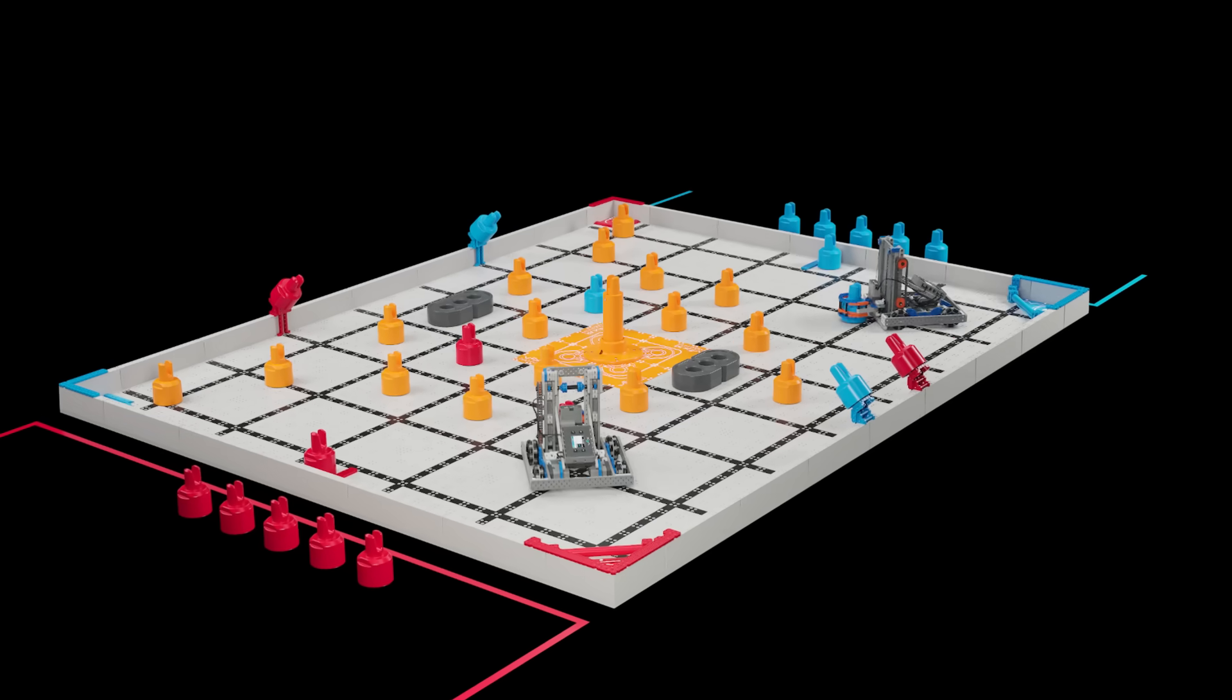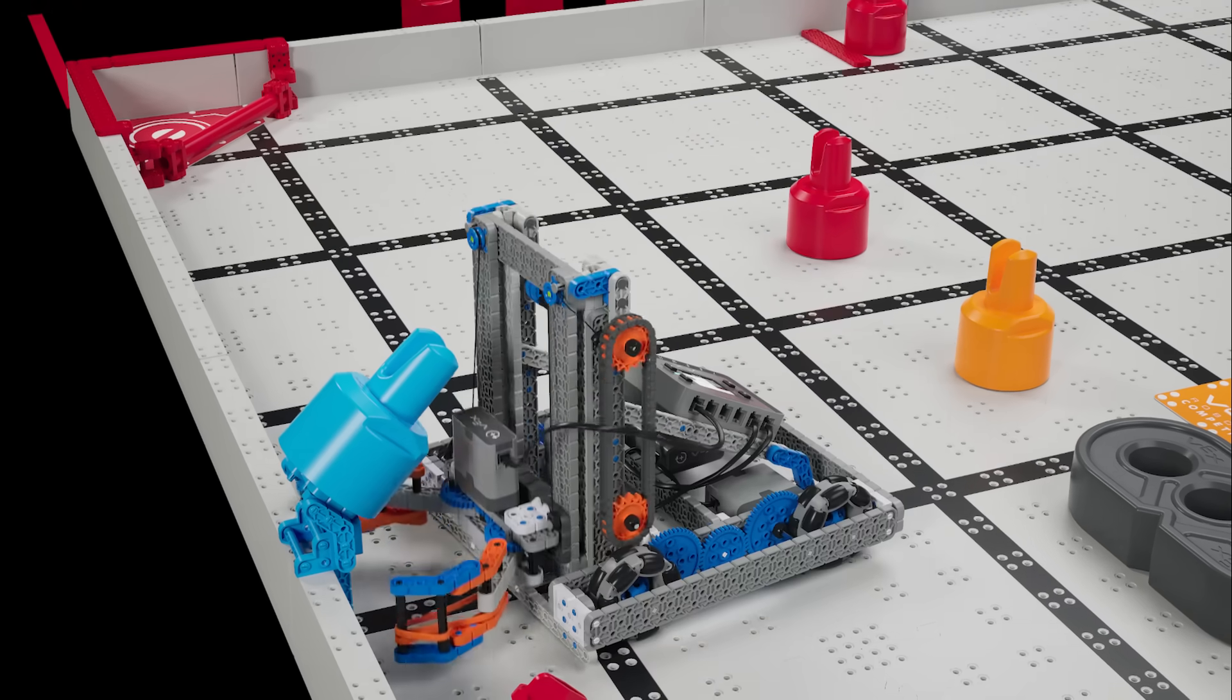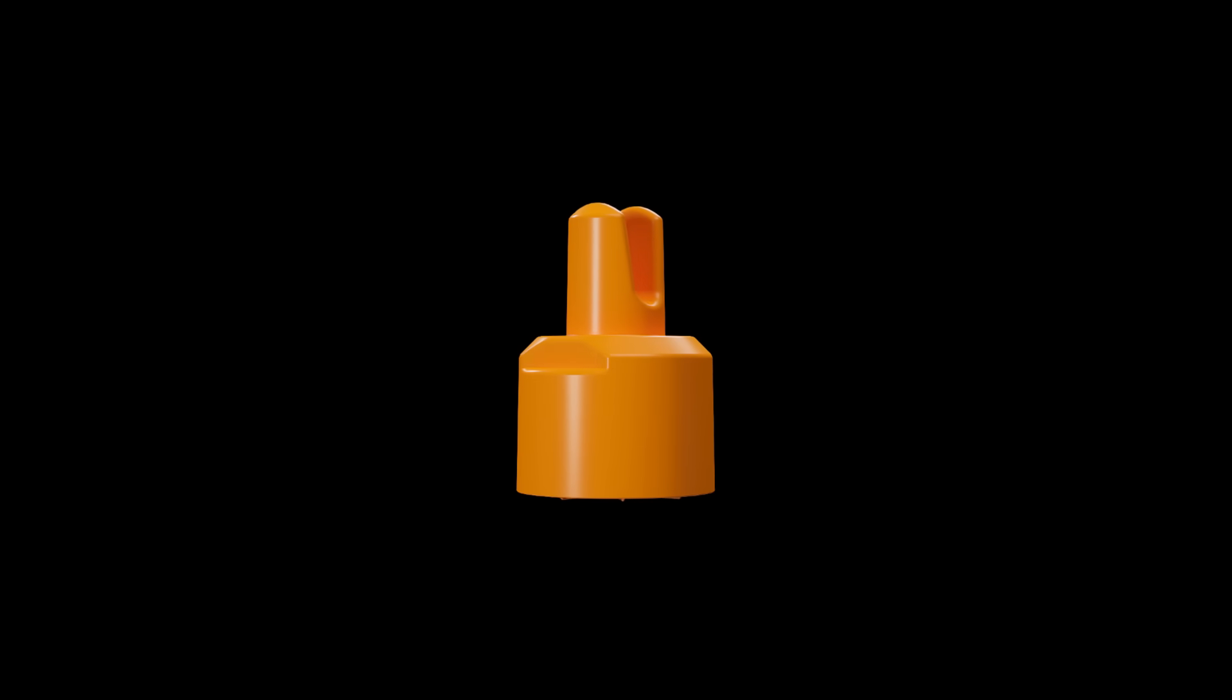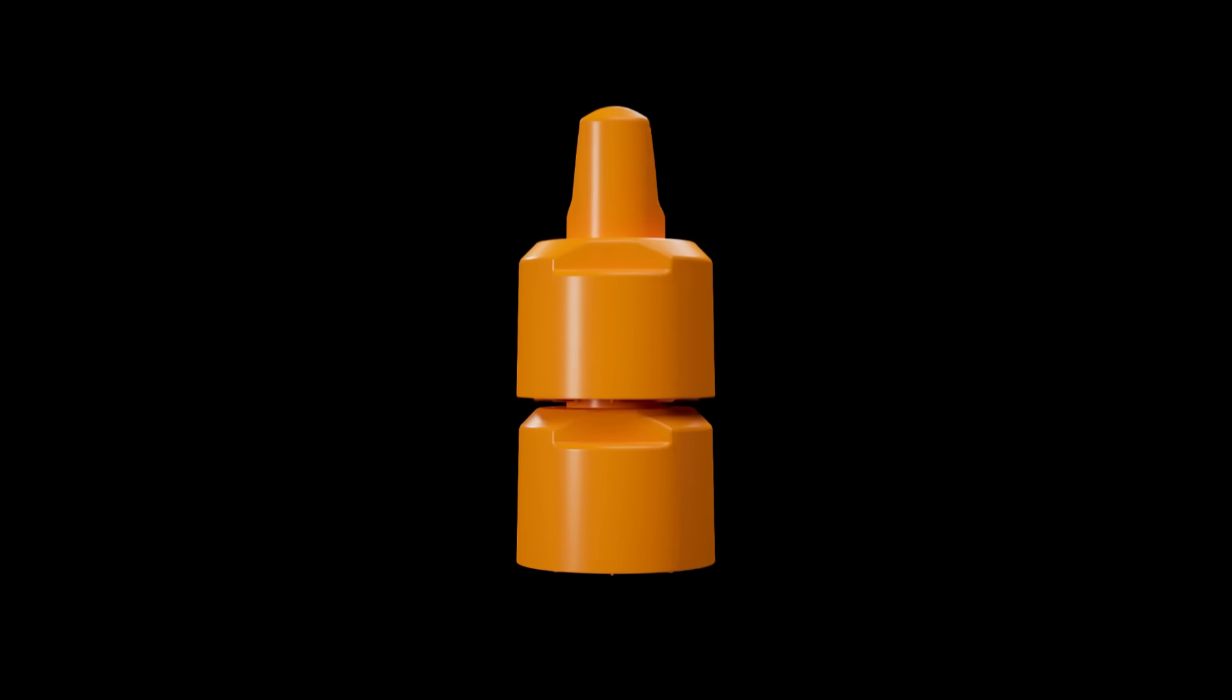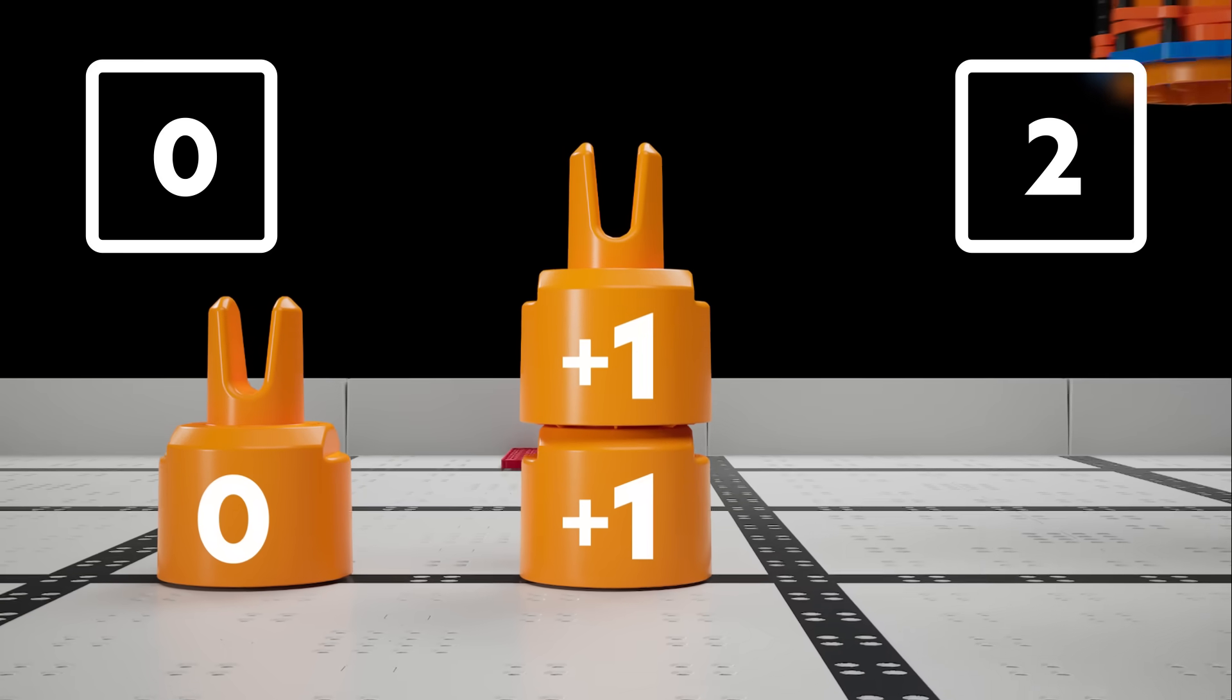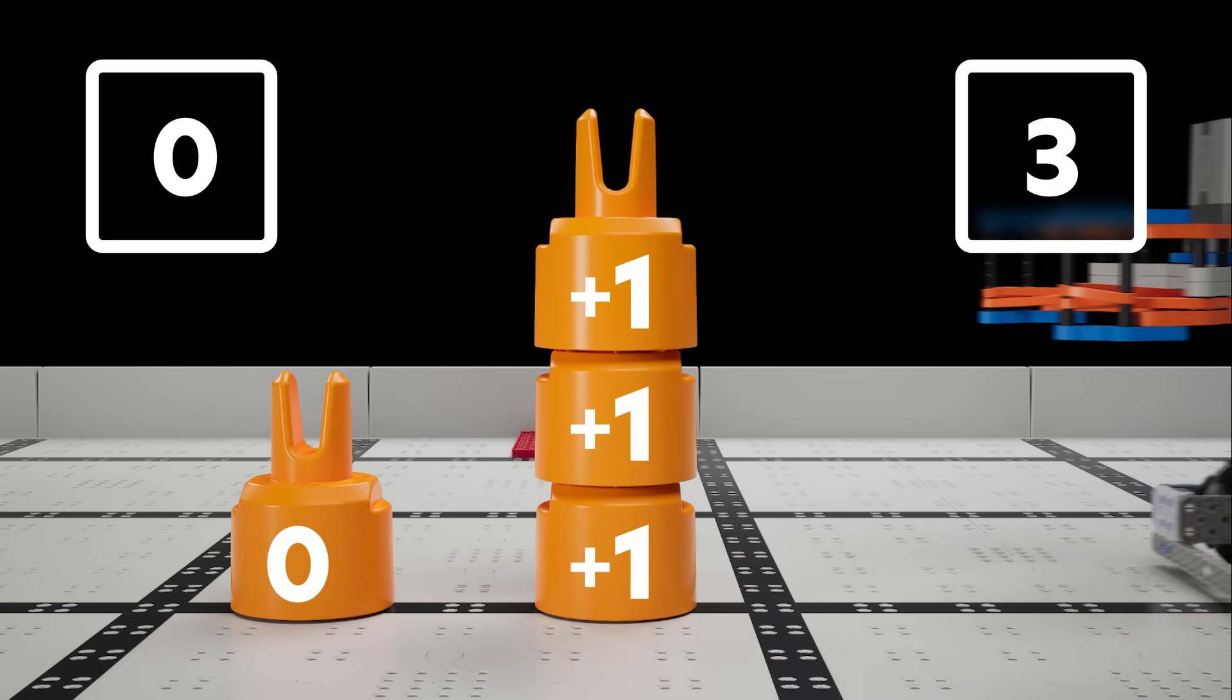Mix & Match is a game of stacking and strategy where a single object can dramatically alter the score at any time. A game object on its own is worth zero points. A stack is created when one object is placed on top of another. Once a stack is created, no matter its location on the field, it is immediately worth points. Each connected pin in a stack is worth one point.